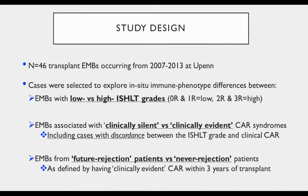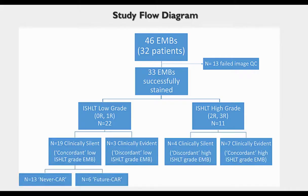Our study cohort consisted of 46 transplant biopsies from the University of Pennsylvania between 2007 and 2013. Cases were selected to explore in situ immune phenotype differences between biopsies with low and high ISHLT grades (0 and 1R low; 2R and 3R high), between biopsies associated with clinically silent versus clinically evident rejection syndromes — including cases with clear discordance between histologic grade and clinical syndrome — and between biopsies from future rejection patients versus never-rejection patients, as defined by having clinically evident rejection within the first three years post-transplant.